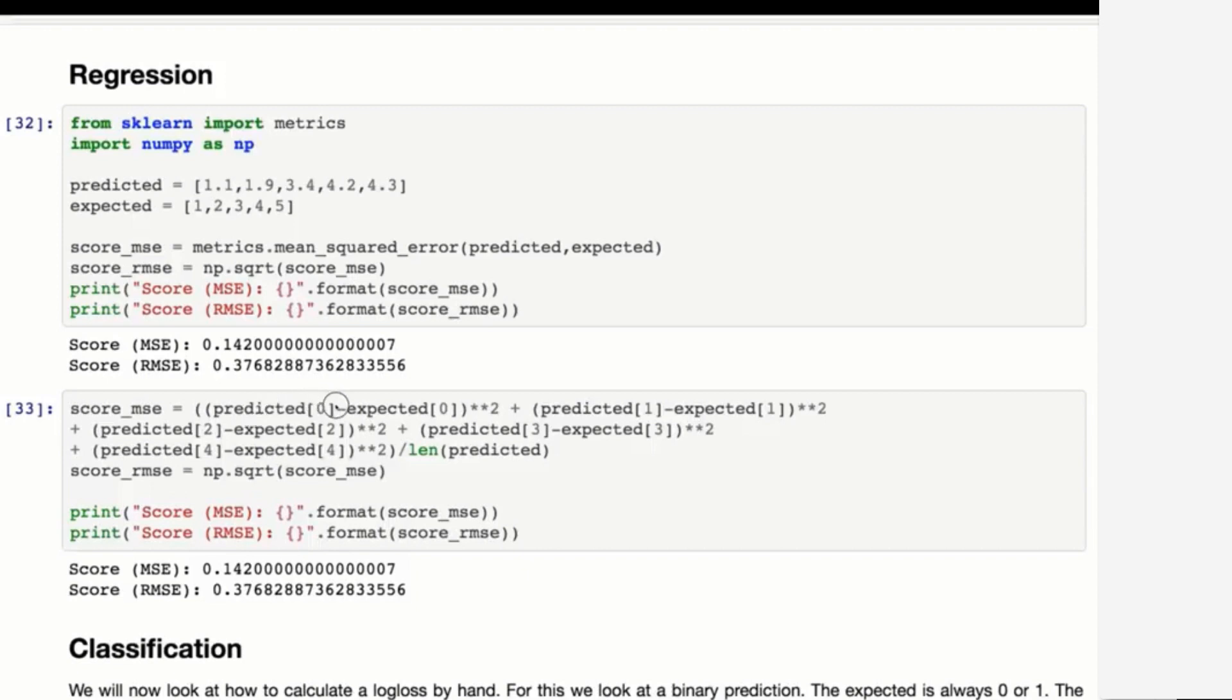We're basically taking a sum of squares. Here you can see the predicted minus the expected and we sum those, the squares, and then finally we divide that by the length of the predicted.